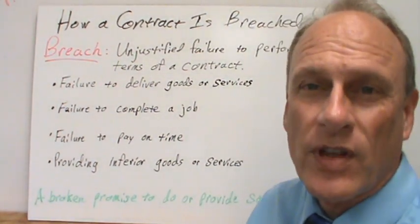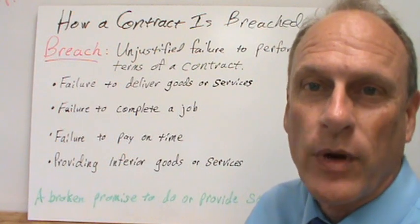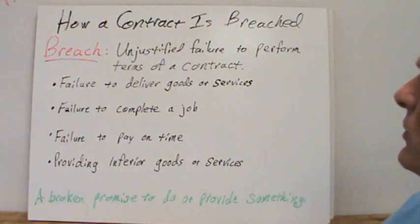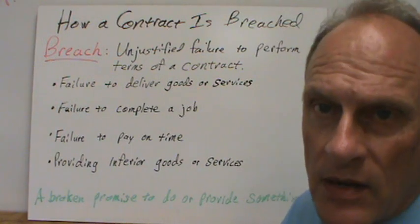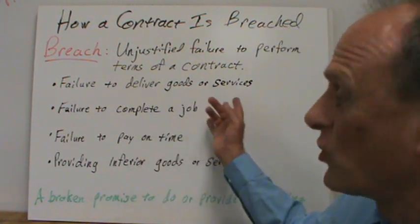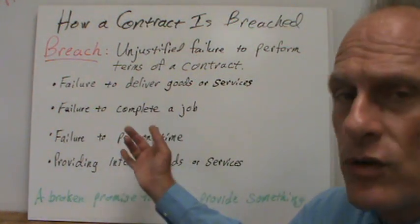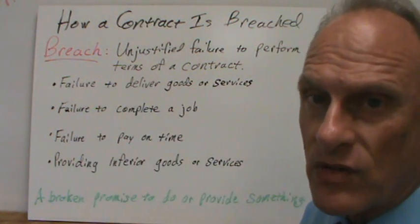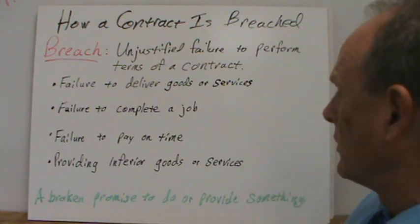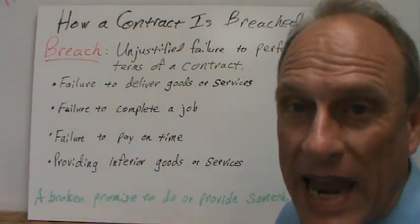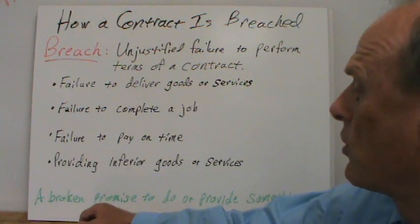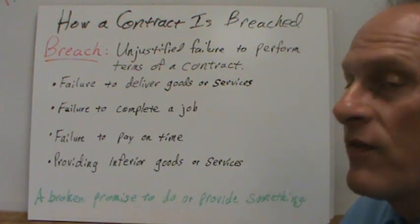How is a contract breached? The first thing we need to understand is: what is a breach? How do we define this thing we call breach of a contract? A breach is an unjustified failure to perform the terms of a contract. That failure might be something like failure to deliver goods, failure to deliver services, failure to complete a job described and promised in the contract, failure to pay on time, or even providing inferior goods or services. Basically, a breach is a broken promise to do or provide something.